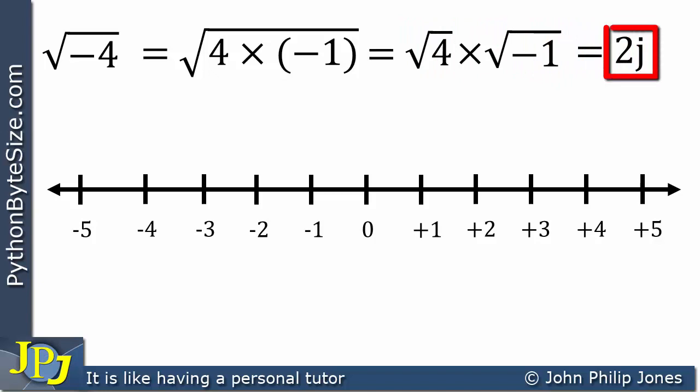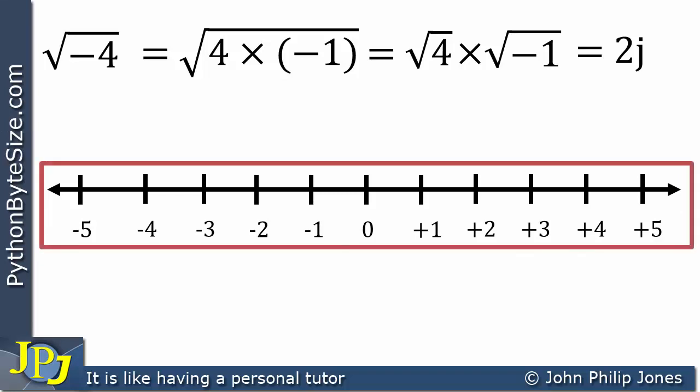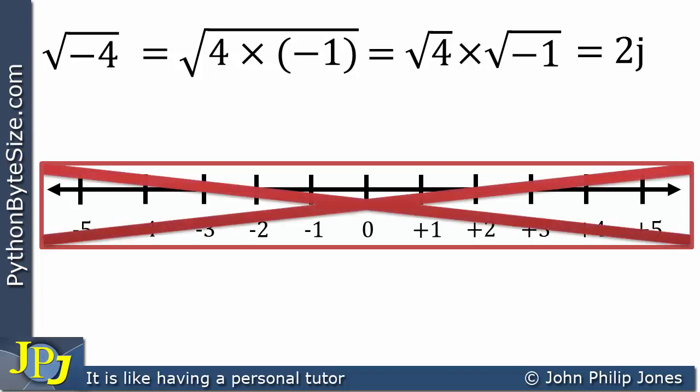Let's now consider 2j and ask where it is on the real number line. The question is: is there anywhere along the real number line that I can place 2j? The answer is clearly no. 2j does not have a position on the real number line, which is not surprising because 2j is not a real number — it is an imaginary number. We have two units of the imaginary number j, where j represents the square root of minus 1.